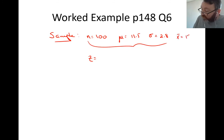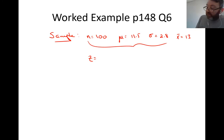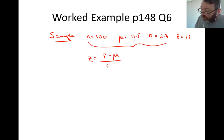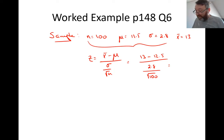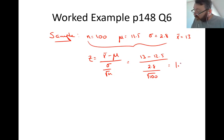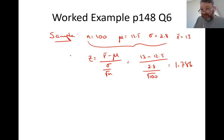The z-score for the sample is z = (x̄ − μ) / (σ/√n) = (13 − 12.5) / (2.8/√100) = 0.5 / 0.28 = 1.786. So the z-score for the sample is 1.786, compared with 0.1786 for the whole population — a much higher value because we are averaging over 100 people.